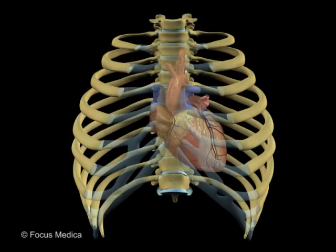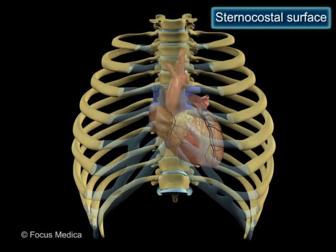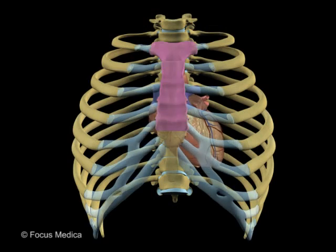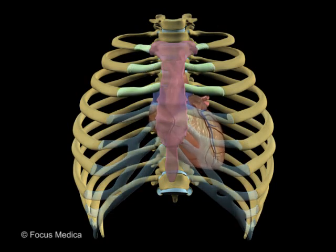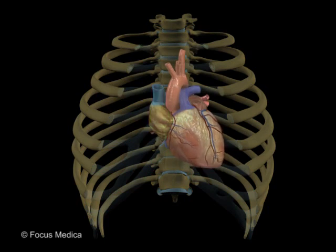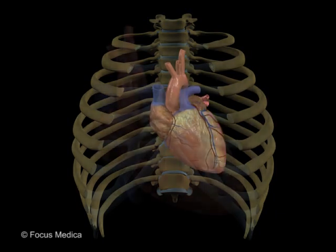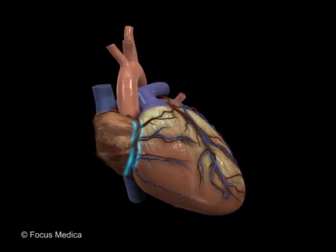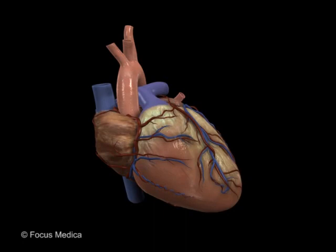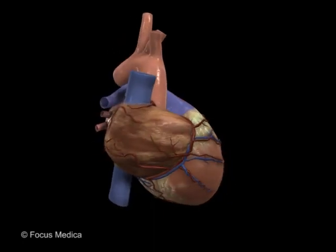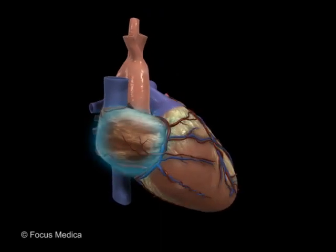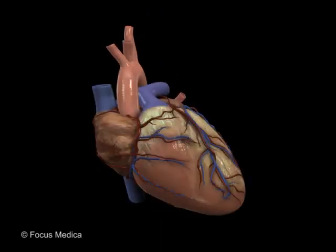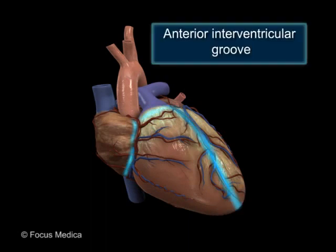The anterior surface of the heart is also called the sternocostal surface. It is right behind the sternum and the upper costal cartilages. It is formed mainly by the right atrium and the right ventricle. To its left one-third is the left atrium and left ventricle. The atrioventricular groove, or coronary sulcus, runs obliquely downwards and to the right on this surface, separating the atria from the ventricles. Running perpendicular to this towards the apex is the anterior interventricular groove.